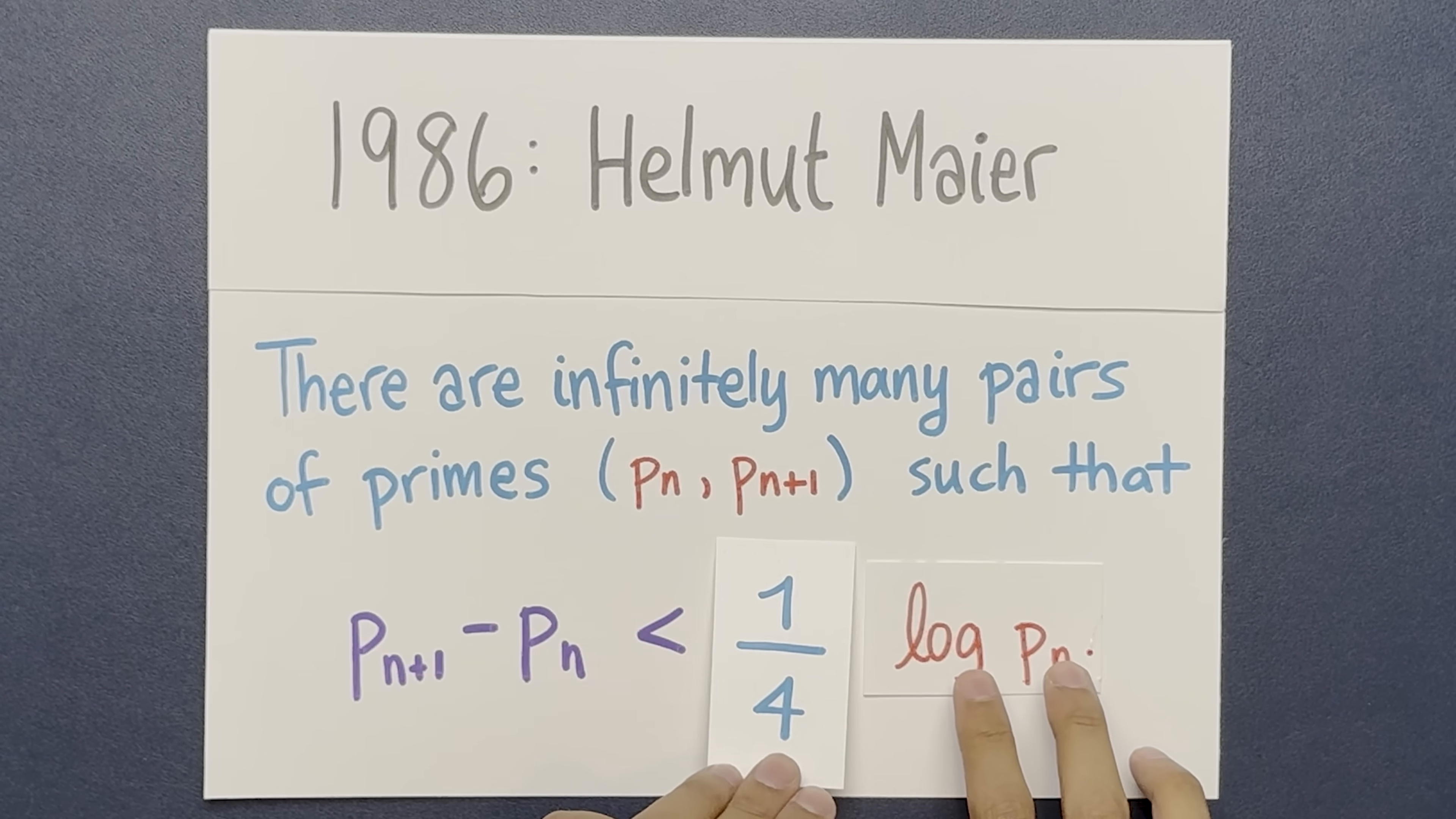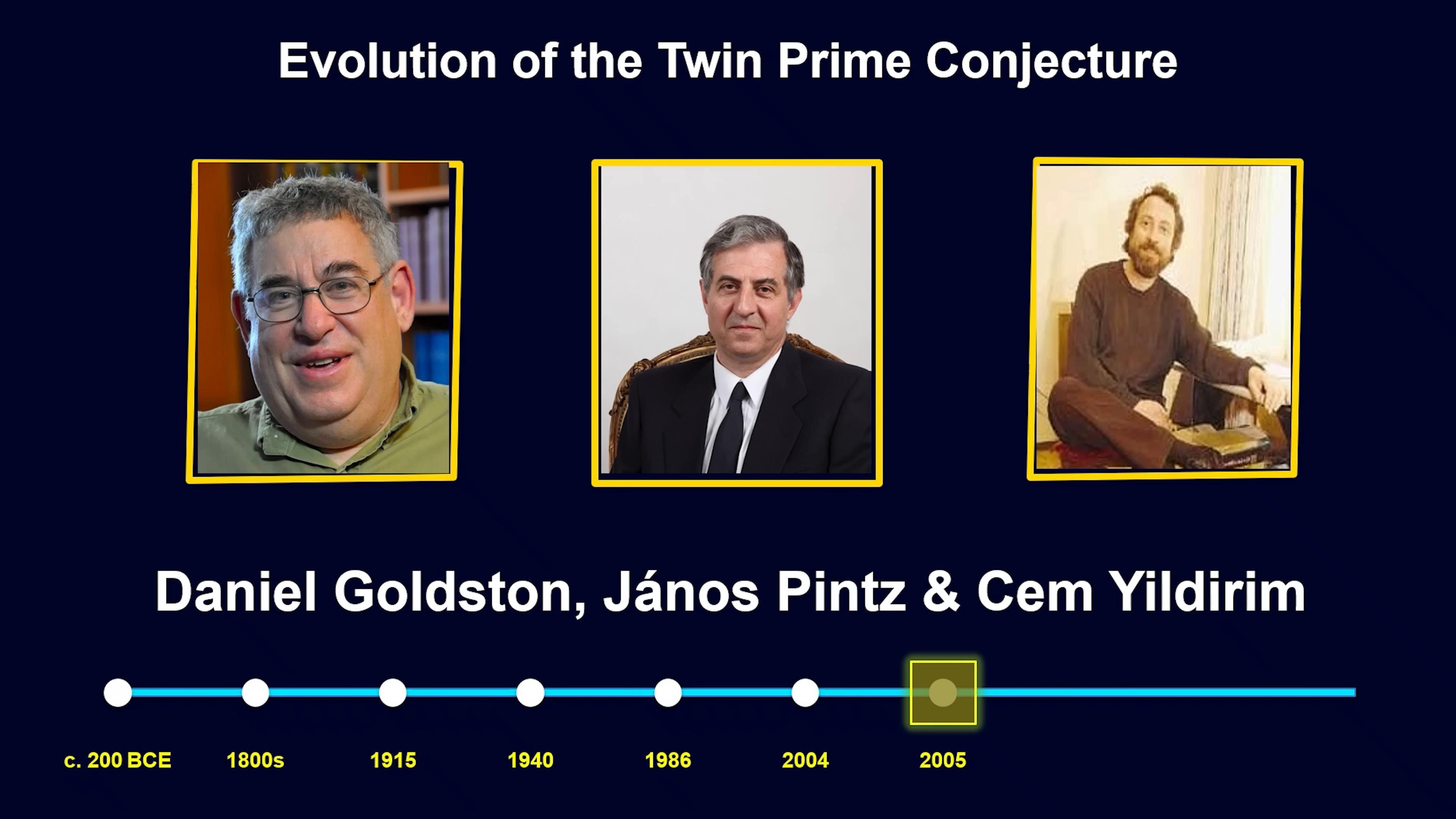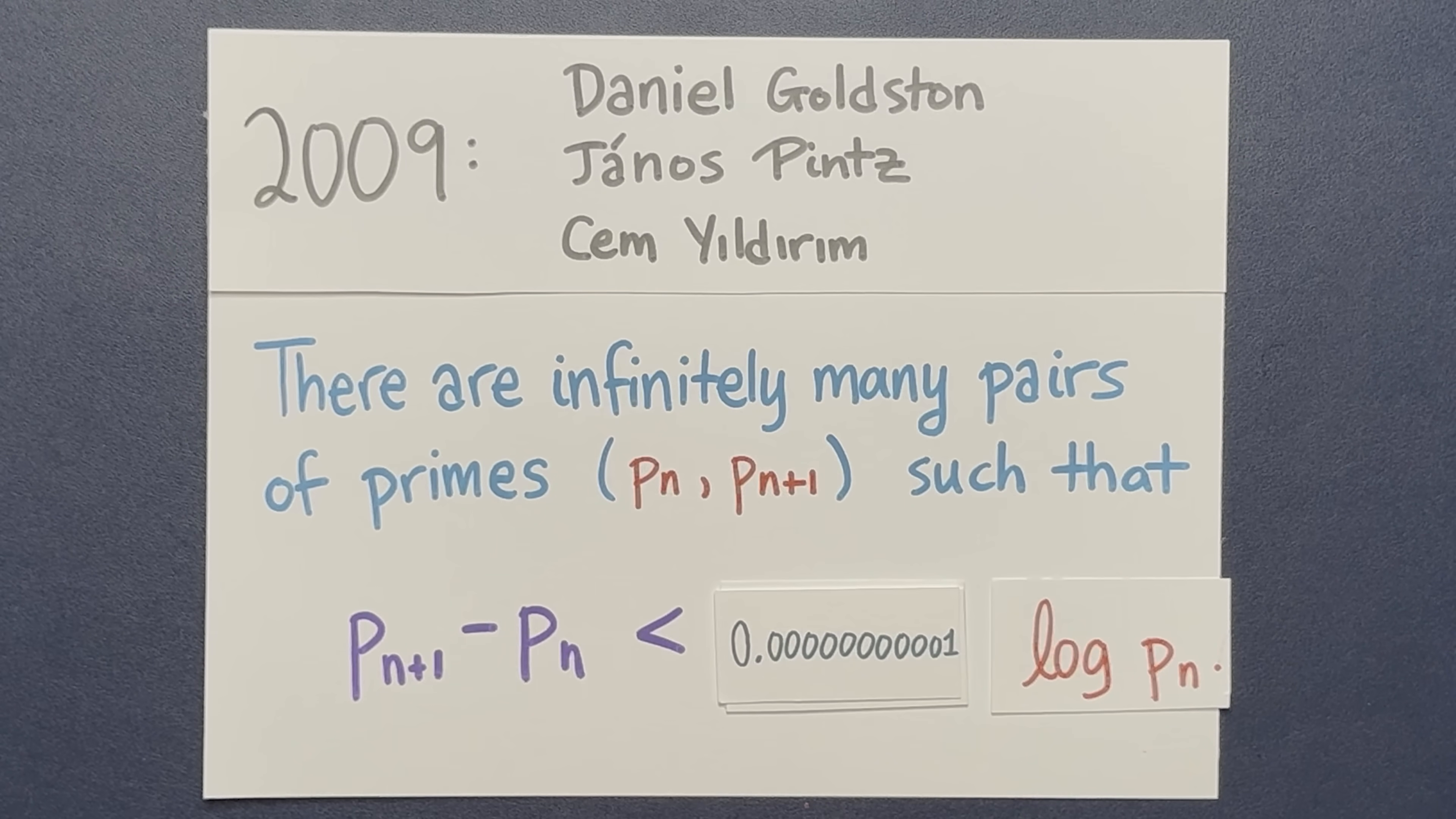Then in 2004, Daniel Goldstein and Cem Yildirim showed that you can lower the constant to 0.085786. But in 2005, a trio of mathematicians, Goldstein, Pence, and Yildirim, proved a result which shocked the mathematical community. They showed that you can make this consonant as small as you want. If you take it to be 0.01, there are infinitely many primes which are closer together than 0.01 of the average gap. Likewise with any number you choose.